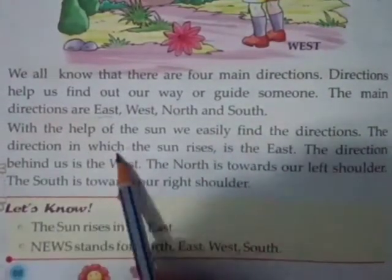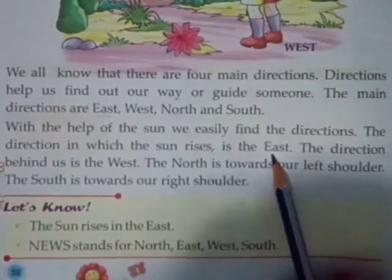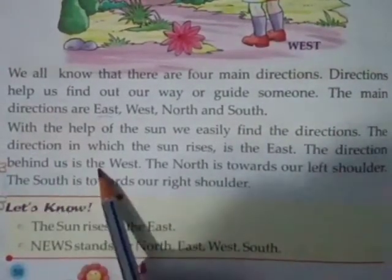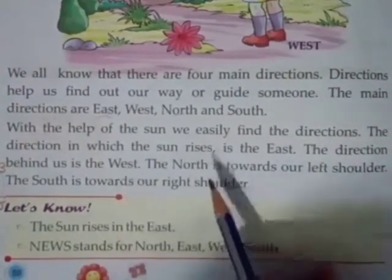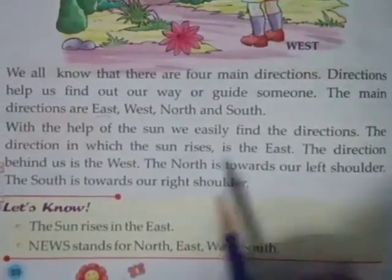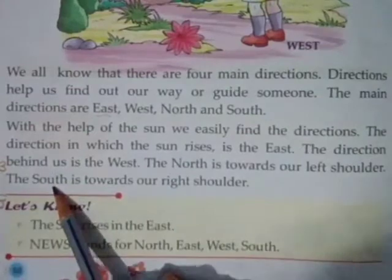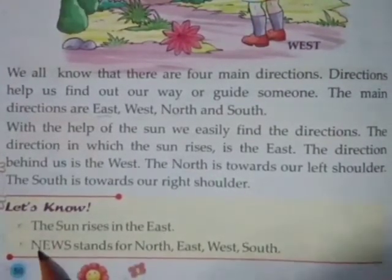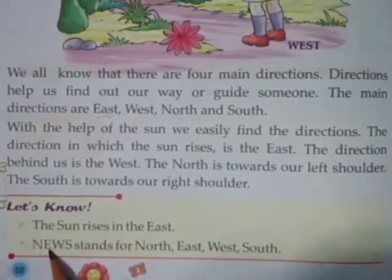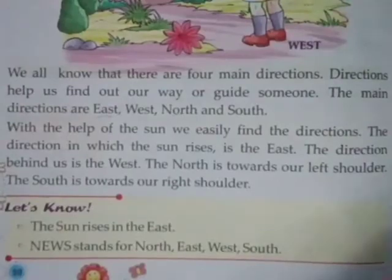The direction in which the sun rises is the east. वो direction जहां से sun निकलता है, सूरज उगता है, उसको हम East कहते हैं. The direction behind us is the west. The north is towards our left shoulder, and the south is towards our right shoulder. The sun rises in the east. NEWS stands for North, East, West, South. News में हर तरफ की, चारो directions की news सुनाते हैं, इसलिए उनका नाम इस तरह से रखा गया है.